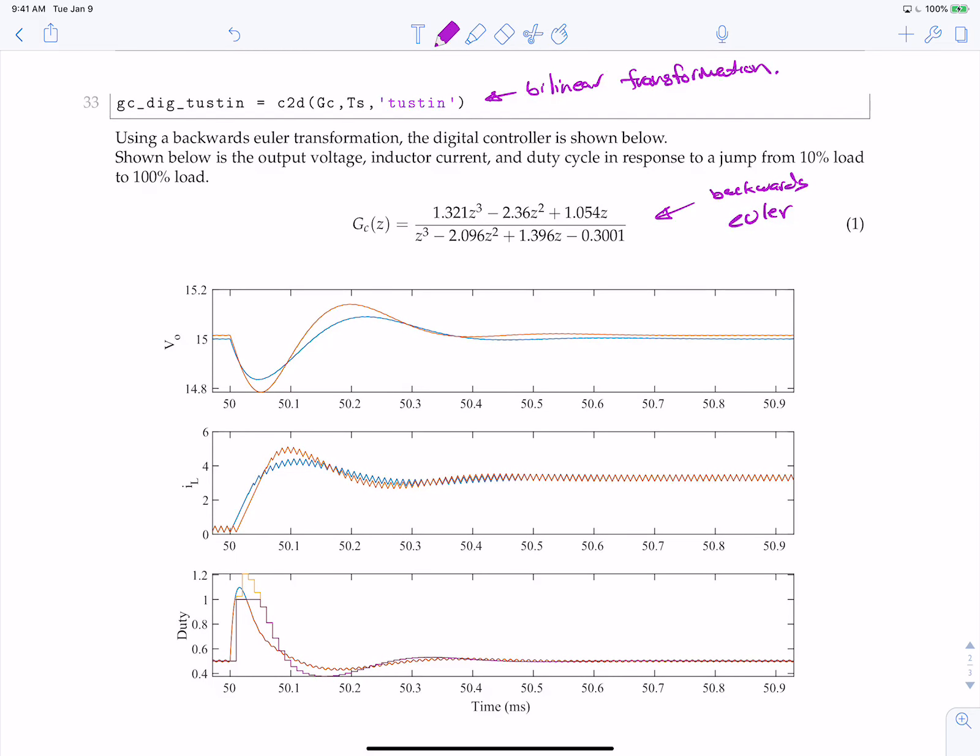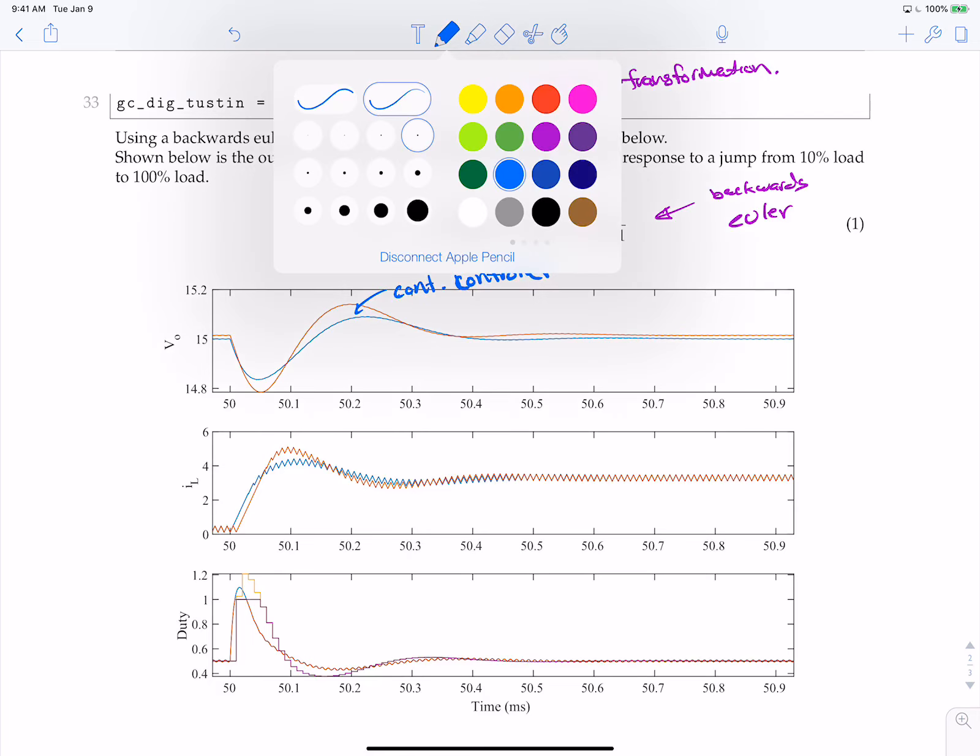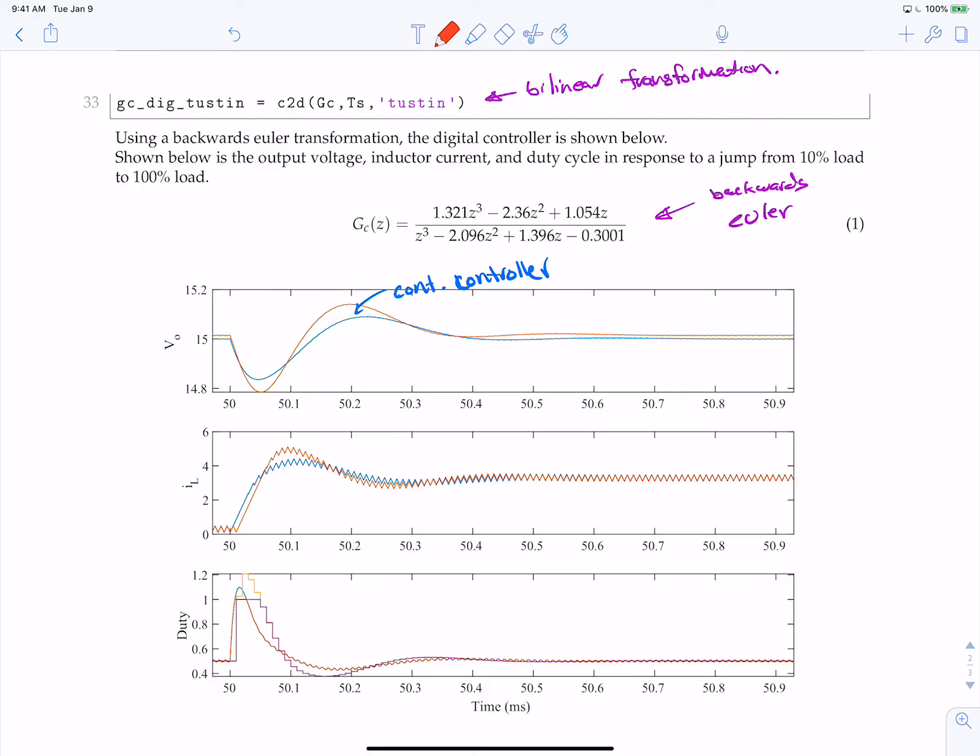And what you can see here is our output voltage. So in blue, that is the continuous time controller. This is the continuous time controller. And in red, we have our digital controller. You can see there's definitely a noticeable difference.